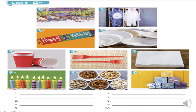Page 128. Unit 5. Track 92. 1. Streamers. 2. Costume. 3. Banner. 4. Plates. 5. Cups. 6. Forks. 7. Napkins. 8. Candles. 9. Snacks. 10. Presents.